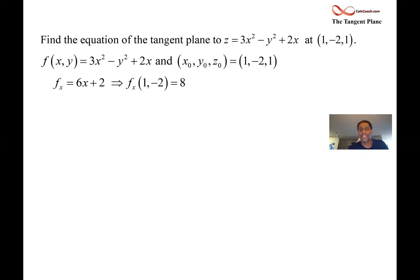Now we move to the y partial. It's going to be negative 2y. And then plugging y naught into that, we'll get positive 4. Pretty straightforward.